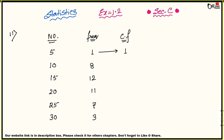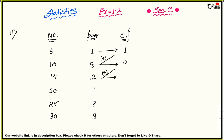To find cumulative frequency: the first value of frequency equals the first value of cumulative frequency — both are the same. Then add 1 and 8 to get 9. Then 9 plus 12 equals 21. Then 21 plus 11 equals 32. Then 32 plus 7 equals 39. Then 39 plus 3 equals 42.